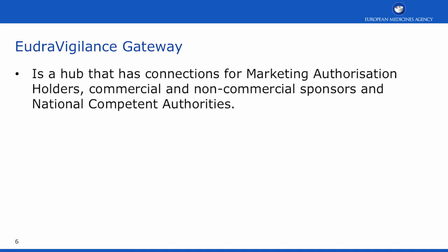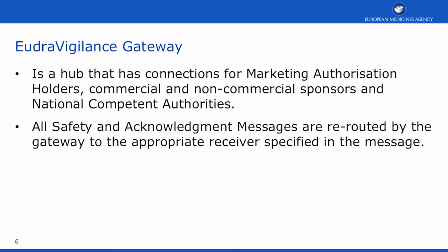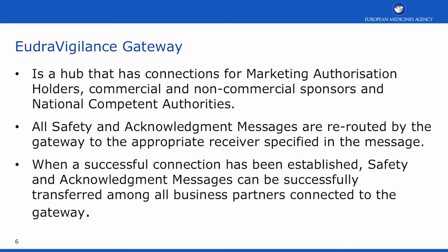The EudraVigilance gateway is a hub that connects marketing authorisation holders, commercial and non-commercial sponsors, and national competent authorities together. All safety and acknowledgement messages are rerouted by the gateway to the appropriate receiver specified in the messages being exchanged. When a successful connection has been established, safety and acknowledgement messages can be successfully transferred among all the business partners connected to the gateway.